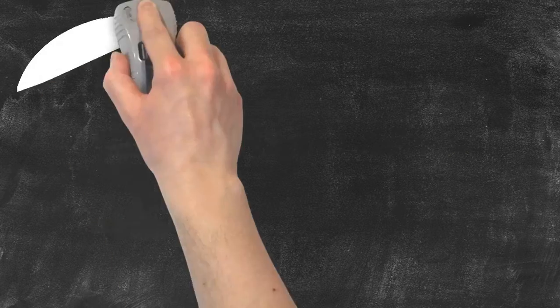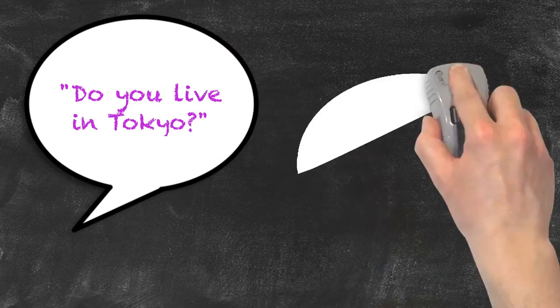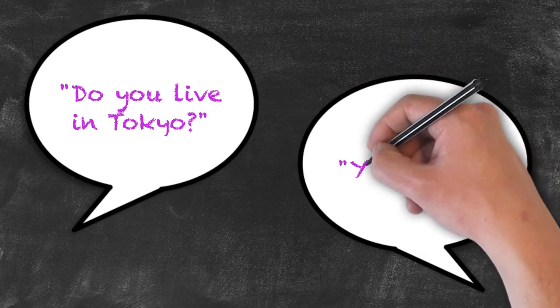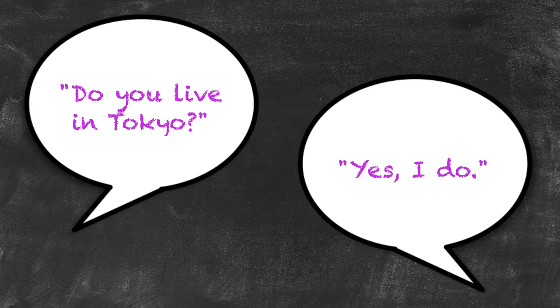It helps us form the short answers. If I were to be asked, do you live in Tokyo? I can form the short answer, yes, I do. Here, the auxiliary verb in the short answer must reflect the auxiliary verb used in the question.